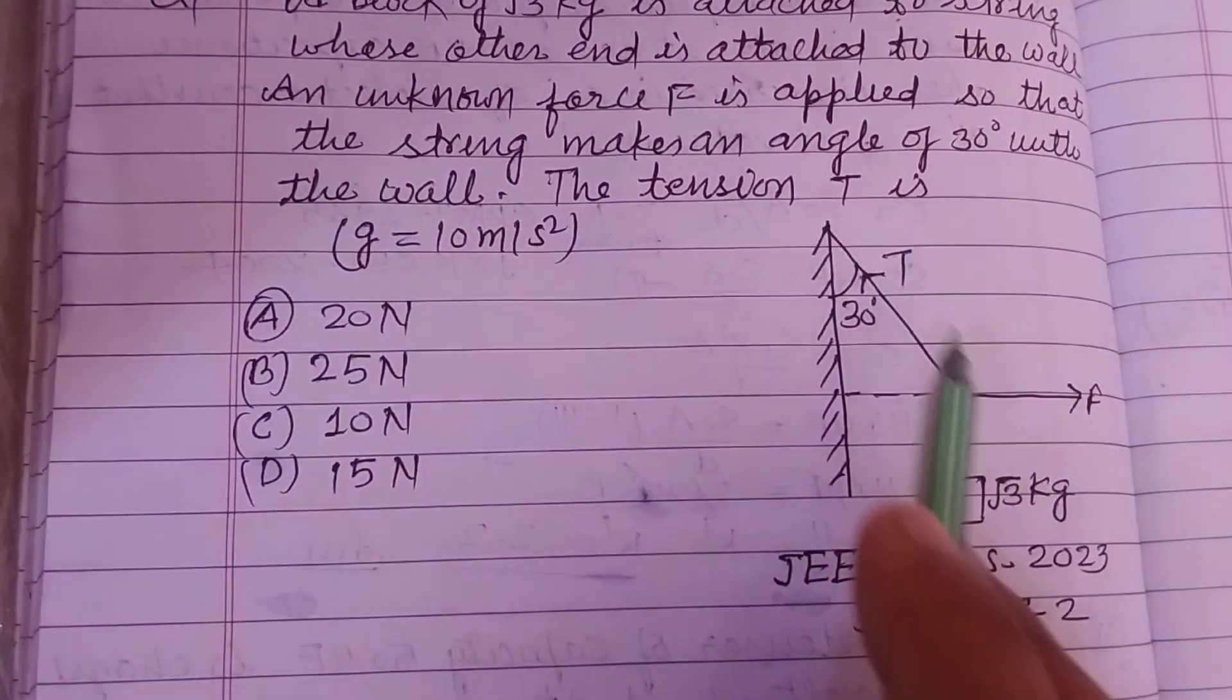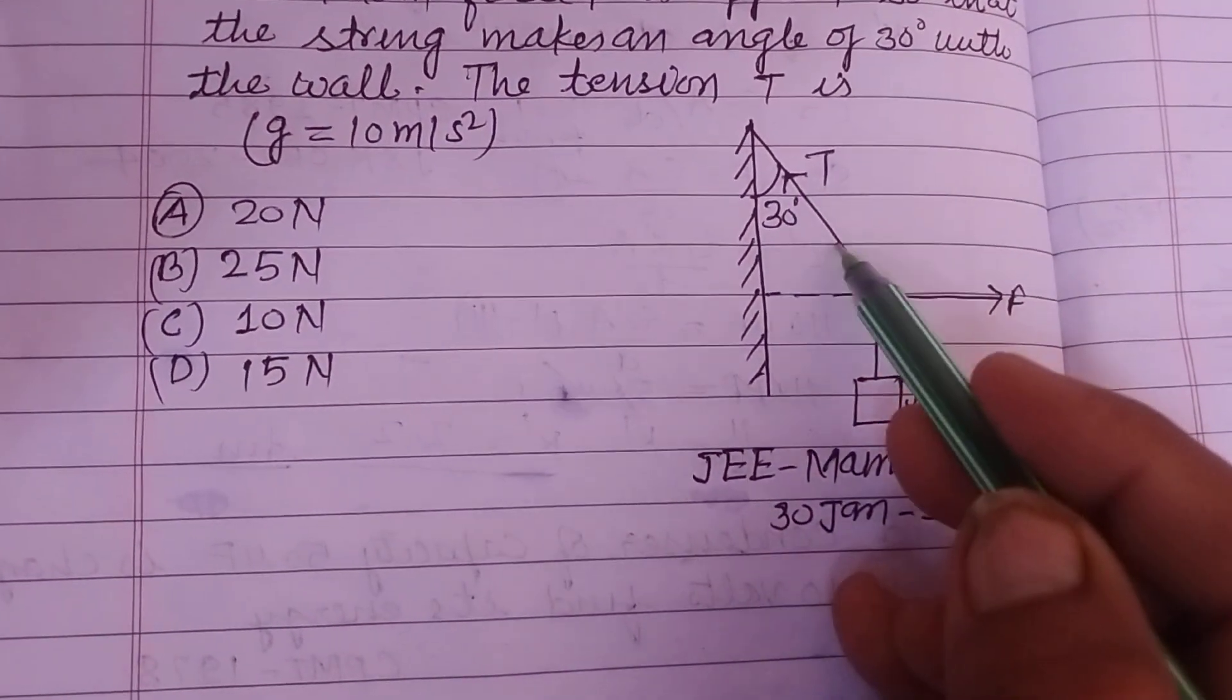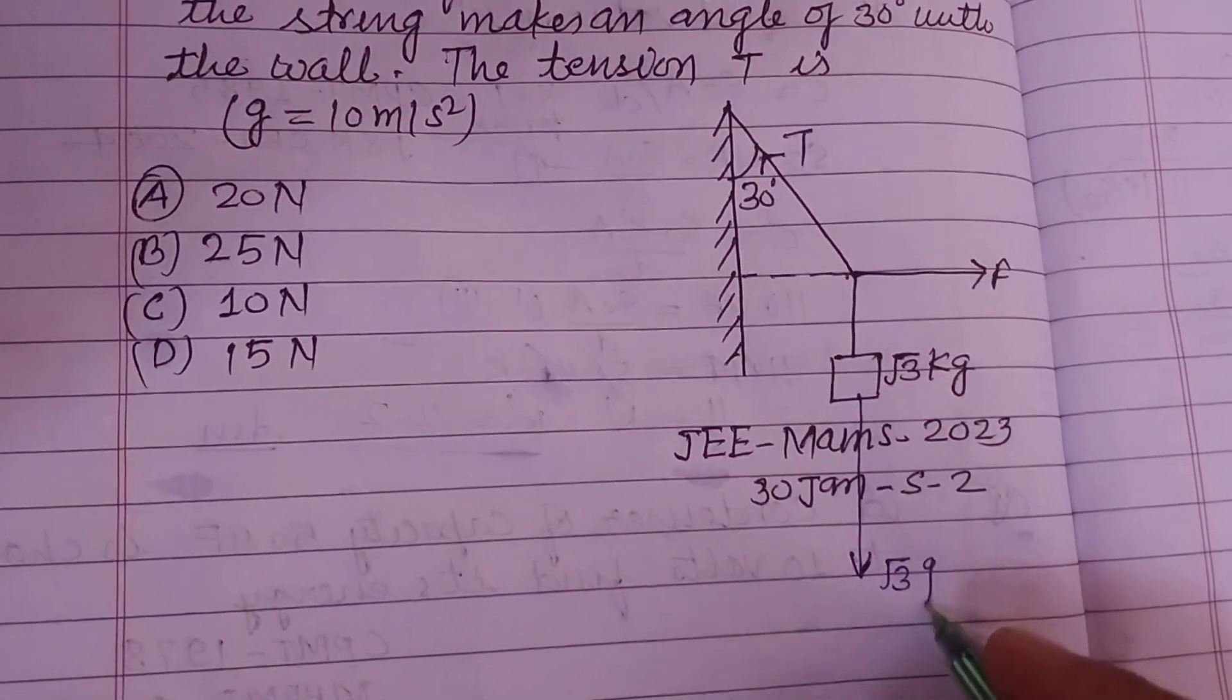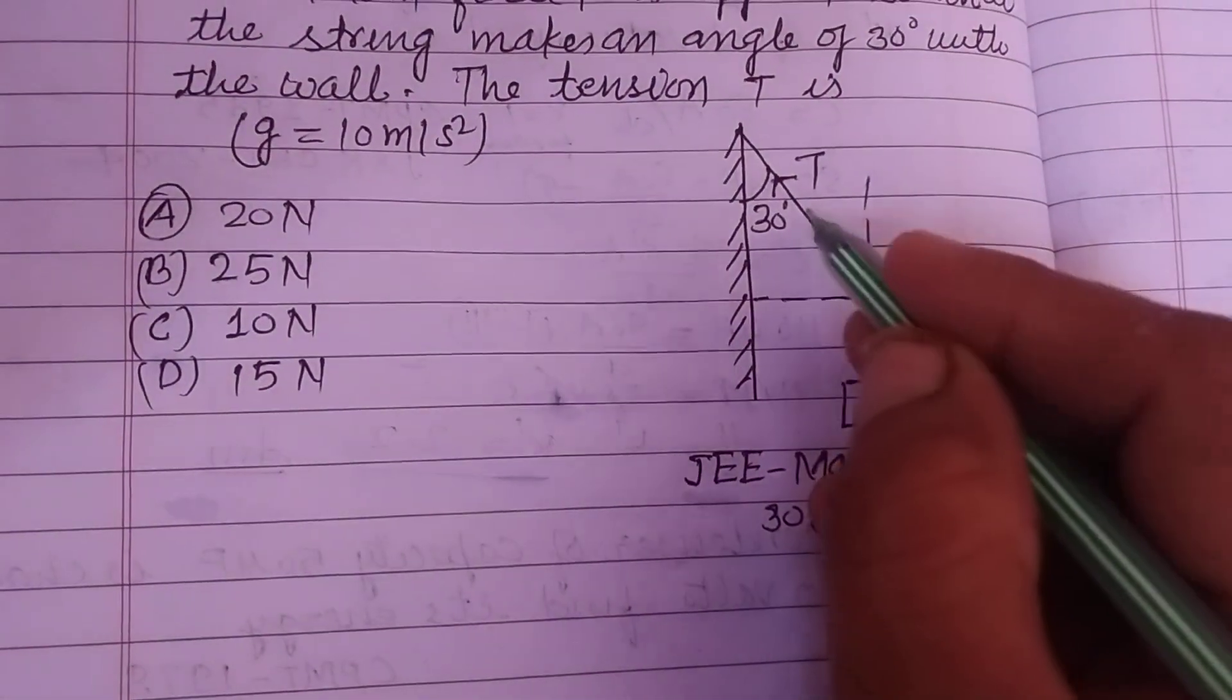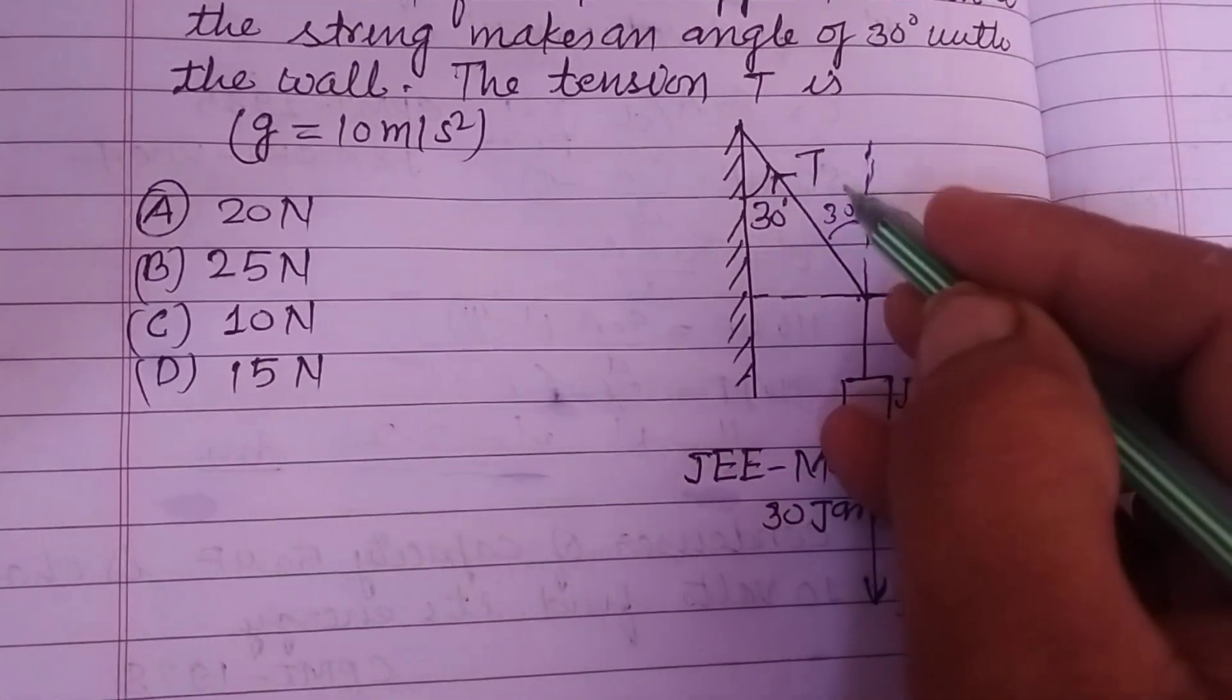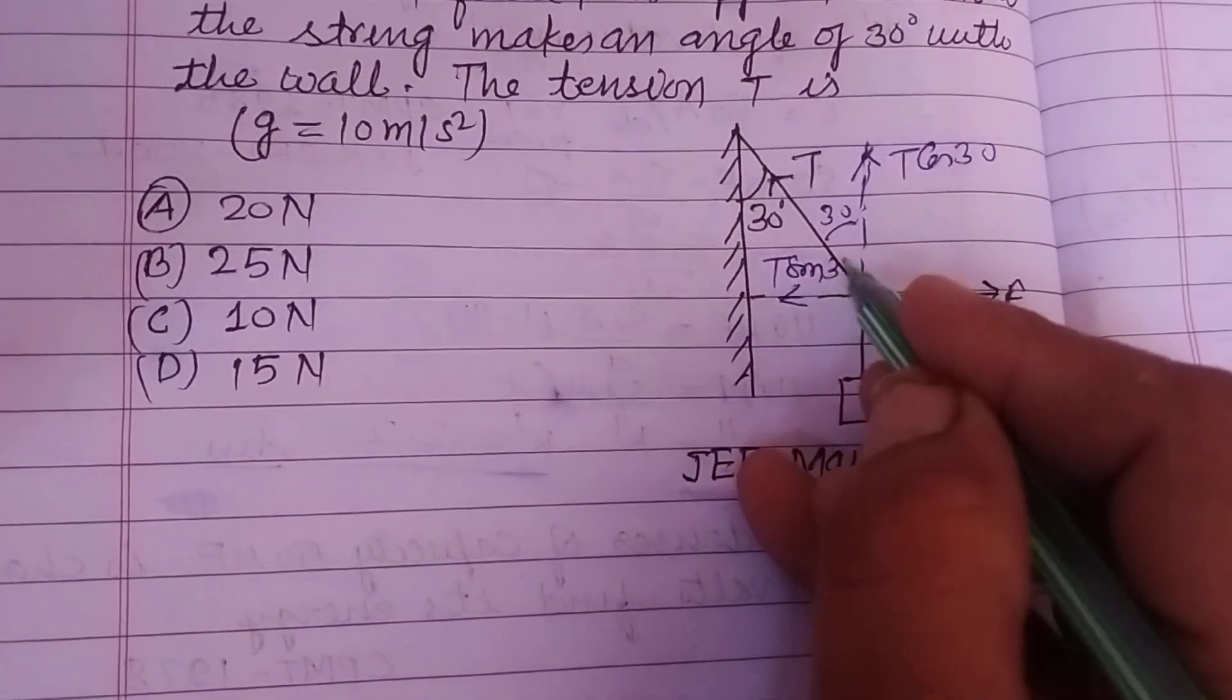The tension T in the string is... So students, here the tension in string is T and this is force F working in downward direction, it's the weight. Now we take a line on this side, so this is 30° to this is 30°. We break tension T into two directions: here it is T cos 30° and here it is T sin 30°.